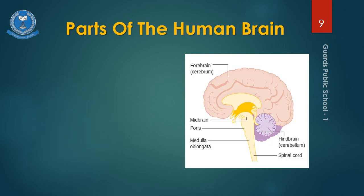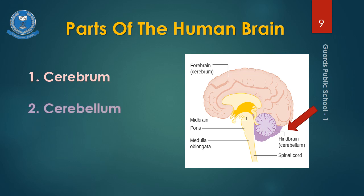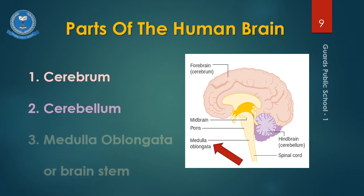Now we will learn about the parts of the human brain. Although the human brain has many parts, today we will discuss three basic and important parts: Cerebrum, which is also called the forebrain; Cerebellum, which is also called the midbrain; and Medulla Oblongata, or brain stem, which is also called the hindbrain.